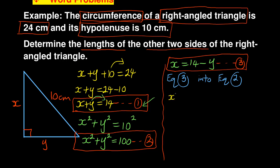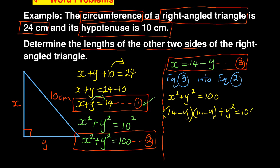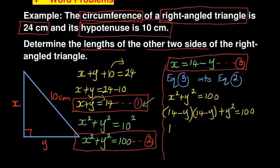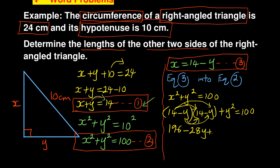In equation two I have x squared plus y squared equals 100. Where there is x, I substitute 14 minus y, giving (14 minus y) squared plus y squared equals 100. Because it is squared, I write it twice: (14 minus y)(14 minus y) plus y squared equals 100. Expanding: 14 squared is 196, then minus 14y minus 14y gives minus 28y, and negative y times negative y gives y squared. So: 196 minus 28y plus y squared plus y squared equals 100.